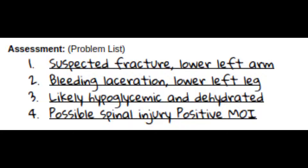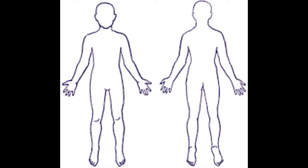The Assessment component documents all of the injuries and illnesses the patient is presenting with. For injuries such as broken bones and soft tissue injuries, place an X on the patient outline indicating where the injury is located, and note the location in the assessment narrative.